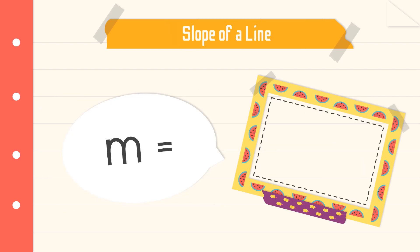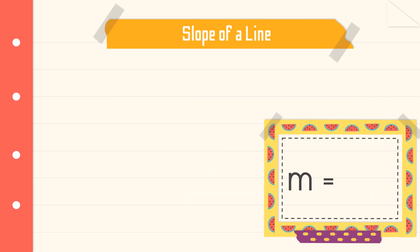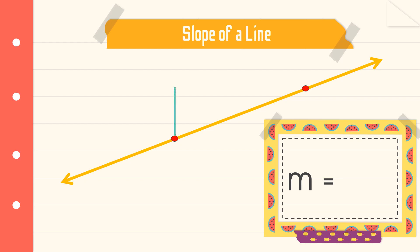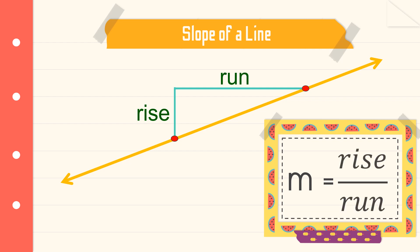Again, slope is the change in y corresponding to the change in x. In symbols, we may write it as delta y over delta x — delta means change. Slope is actually the rise over the run of a line. If we are asked for the slope given its graph, we can easily get the slope by first determining two points, then counting the changes in y-coordinates — that is the rise — and the changes in x — that is the run.